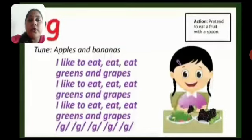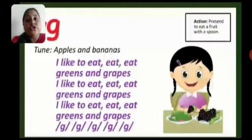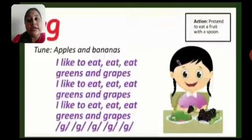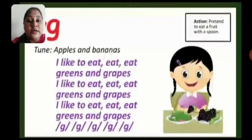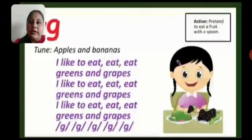Okay children, I hope you all understood kaise yeh phonic song sing karna hai. Once again, aap mere saath sing karoge phonic song of alphabet G. I like to eat, eat, eat greens and grapes. I like to eat, eat, eat greens and grapes. I like to eat, eat, eat greens and grapes. G, G, G, G, G — this is the sound of G. Okay children, I hope you all understood — G is the sound of G. Aapko G alphabet ka sound aur song dono learn karna hai.